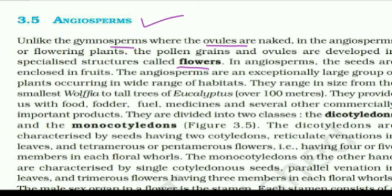Angiosperms are an exceptionally large group of plants occurring in a wide range of habitats. They can be found in deserts, hilly areas, and many other diverse environments.